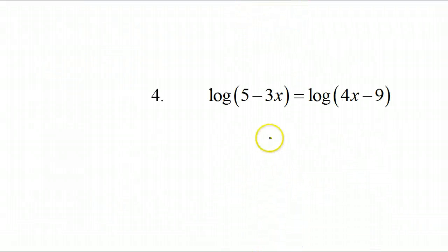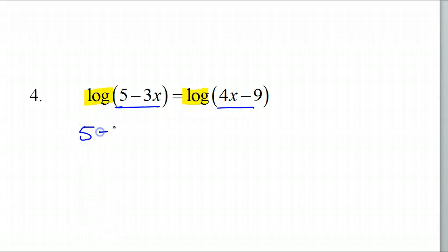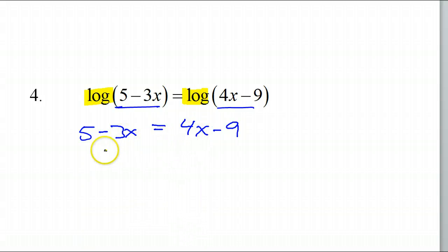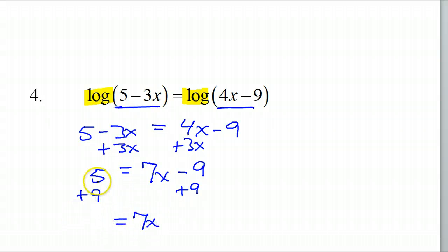Number 4. This is one of those with a log on both sides, so these two parts must be equal. If the logs are equal, then the argument must be equal. So five minus 3x is equal to 4x minus 9. When you have the variable on both sides, take care of that first. Add 3x to both sides — that's going to give positive numbers — so that's going to be 7x minus 9. Then add 9 to both sides, giving 14.